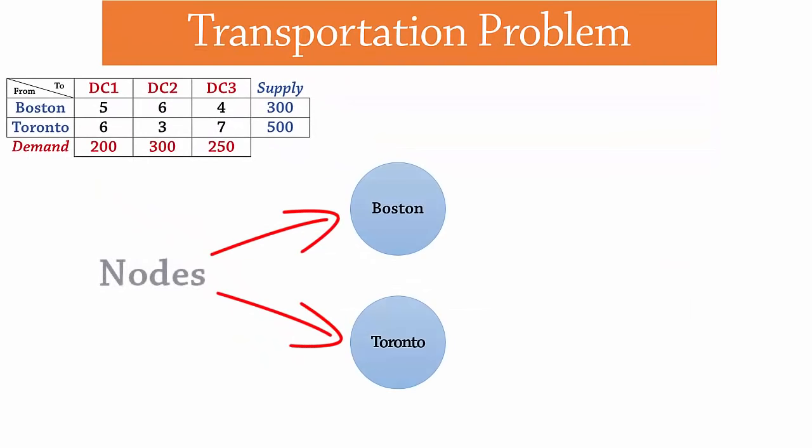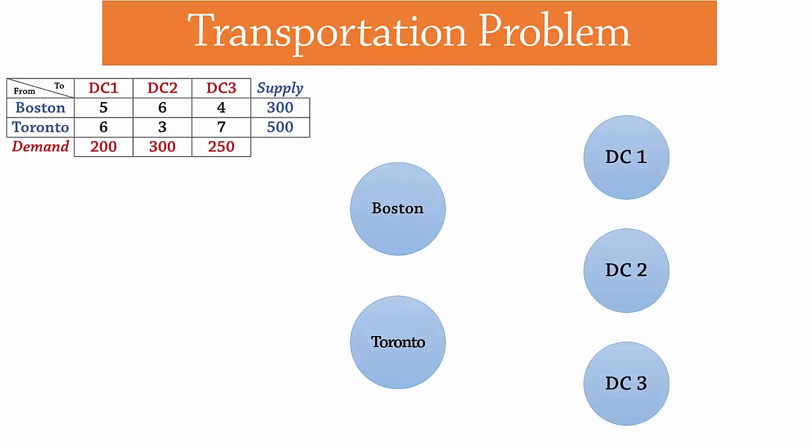These circles are called nodes for the origins or in this case, plants. And these are the nodes for the destinations. Here are the plant capacities and here are the demands at the destinations.